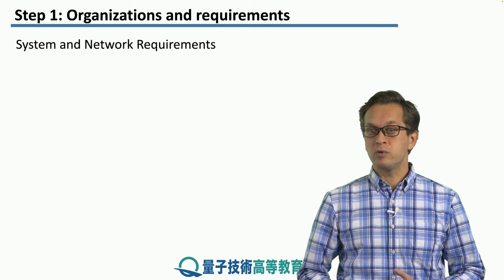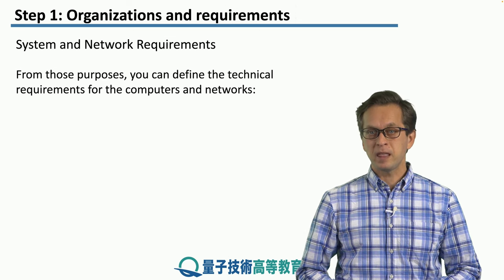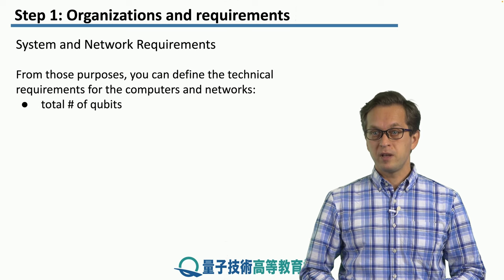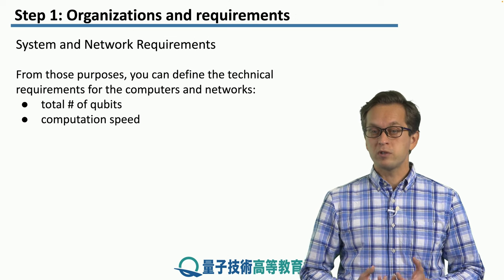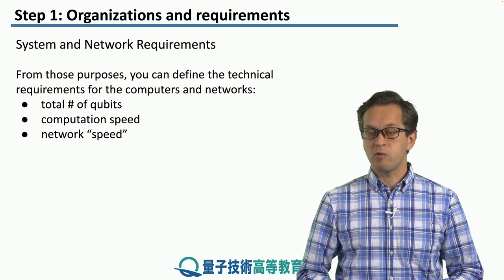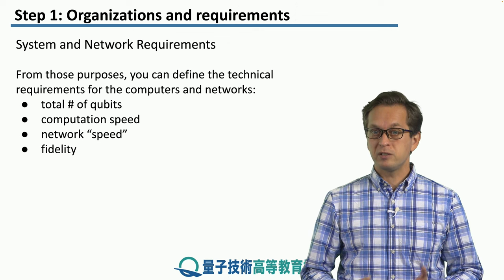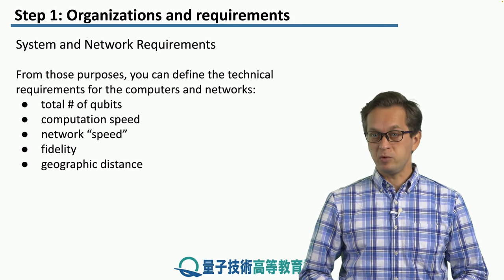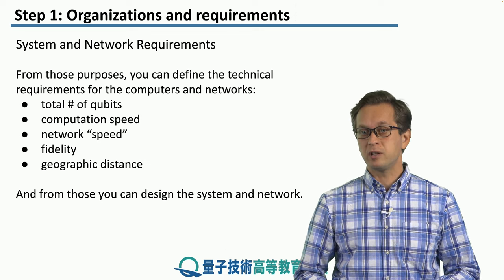Now that we have a clear idea of the various purposes of our network, we can start thinking about system, network, and technical requirements. Given our purposes, we can define requirements such as how many qubits we need, the computational speed of our quantum device, the network speed, how many bell pairs the network must distribute, what the fidelity of these bell pairs should be — since the application determines the required end-to-end fidelity — and the geographic distance between nodes. From this, we can start to think about how to actually design and build the network.